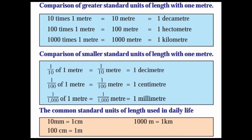Comparison of smaller standard units of length with 1 meter: 1 by 10 of a meter is 1 decimeter; 1 by 100 of a meter is 1 centimeter; 1 by 1000 of a meter is 1 millimeter. The common standard units of length used in daily life: 10 mm is equal to 1 centimeter; 100 centimeters is equal to 1 meter; 1000 meters is equal to 1 kilometer.